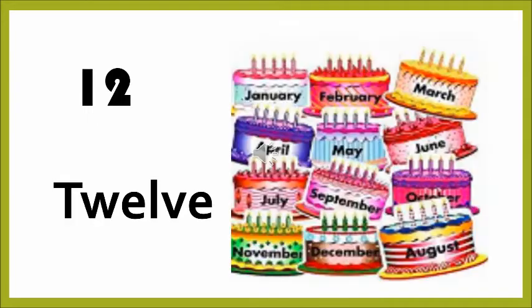Now moving on to the next number. The next number is 12. Let's count the objects first. Oh wow, lovely cakes — one for everybody's birthday. So we have 12 cakes: 1, 2, 3, 4, 5, 6, 7, 8, 9, 10, 11 and 12. Now we will see the spelling of 12: T-W-E-L-V-E. Once more: T-W-E-L-V-E. One last time: T-W-E-L-V-E. 12.